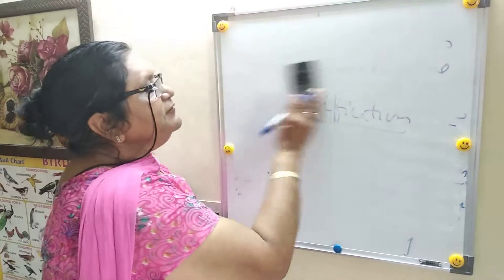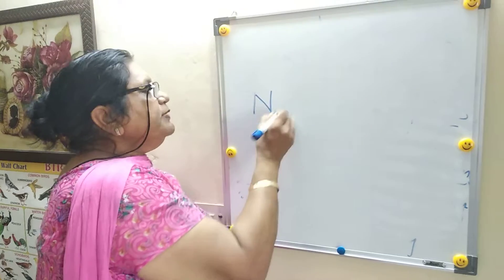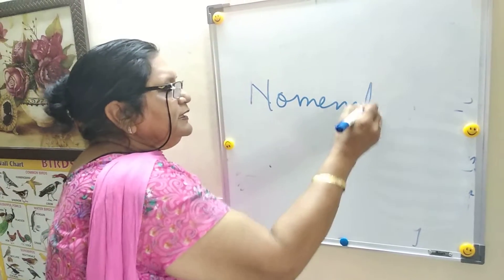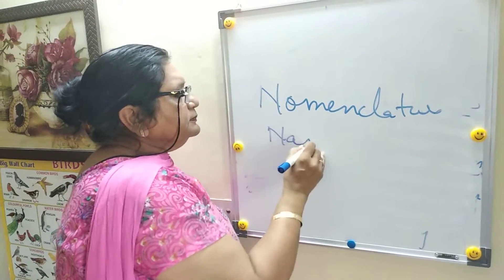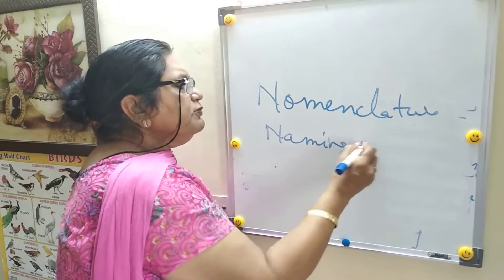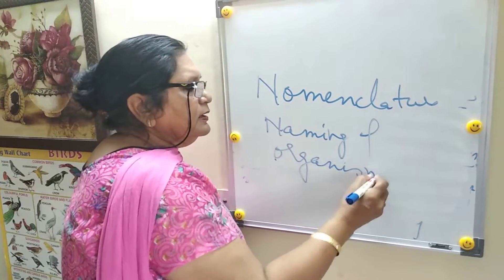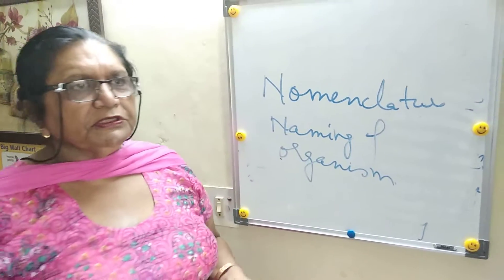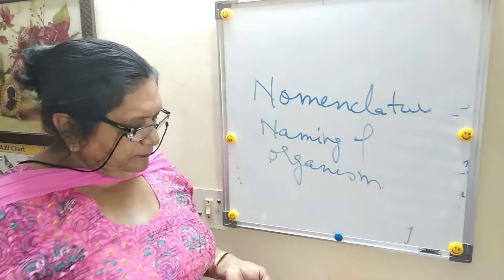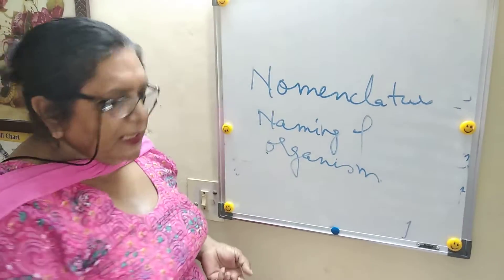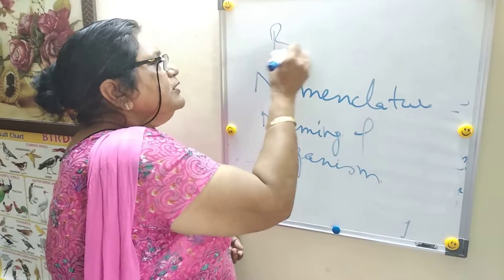The next definition for the board is nomenclature. Nomenclature means naming of the organism. Naming of all living things — plants, animals, or all living beings — is called nomenclature.